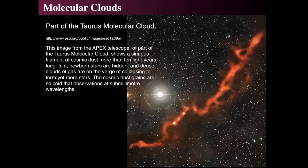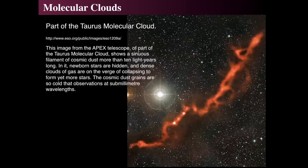The Taurus molecular cloud is so big it almost takes up an entire constellation. Visible only in submillimeter wavelengths at roughly 0.1 millimeter, the filament is approximately 10 light years across, with bright spots inside where newborn stars are forming. The background image from the Digital Sky Survey is overlaid to provide context, since submillimeter wavelengths don't show stars — that's why there are two different resolutions: sharp for stars, and low-resolution for the cloud.